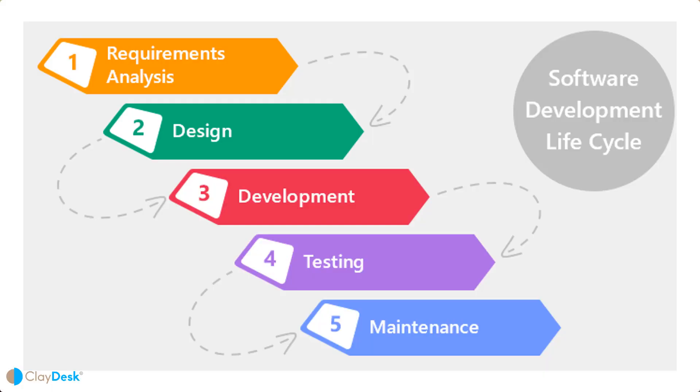Some of those methodologies include object-oriented programming, Scrum, and the Agile process, which also emerged around 2005. The structure of the software development process is a sequence of well-coordinated stages. Depending on the development approach, the number of SDLC steps can definitely vary. We'll take a look at both the five-stage and the seven-stage flavors of the SDLC.